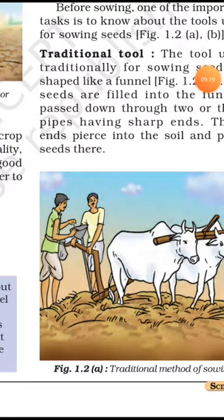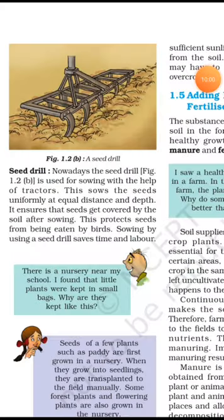Traditionally, seed sowing was done with a funnel-like object: one person holds the plow and another pours seeds into the funnel. Wherever the plow turns the soil, the seeds are poured in and remain in the soil, then start growing when they get favorable conditions like water and manure.